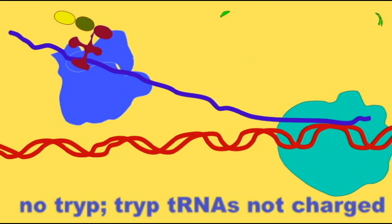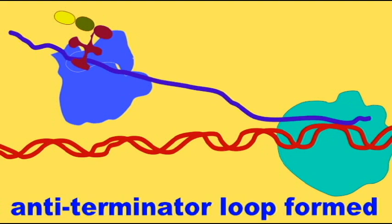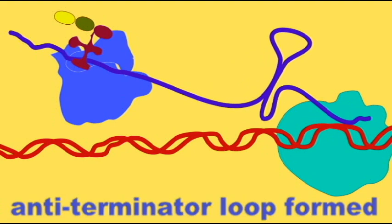While the ribosome stalls on the mRNA, it allows the formation of a new loop, the anti-terminator loop.